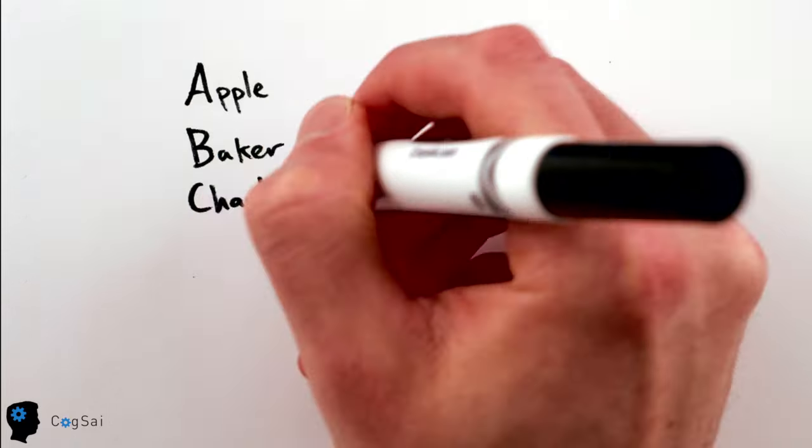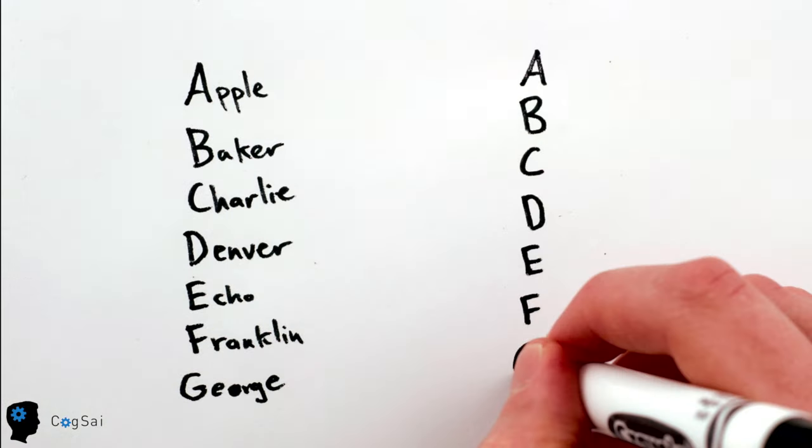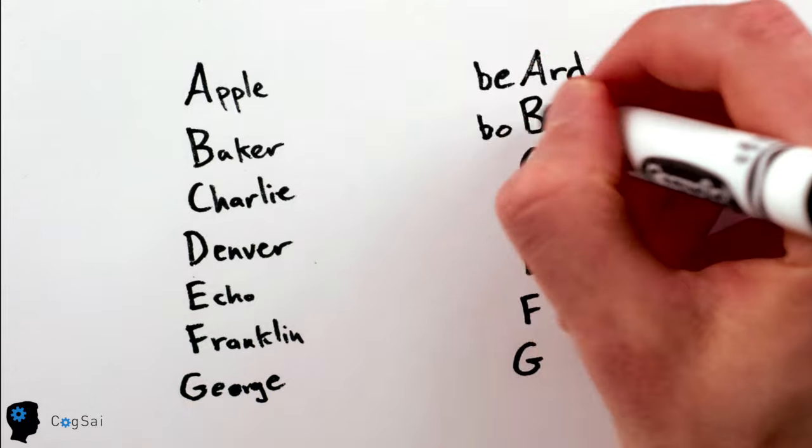Likewise, thinking of things in familiar ways, like alphabetical order, is a lot easier than new ways, like third letter order.